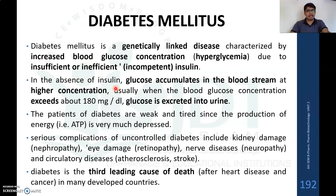In the absence of insulin in the body, there will be glucose accumulation in the bloodstream at higher concentration. Usually, if blood glucose concentration exceeds about 180 mg per deciliter, glucose will start to be excreted through the urine. Patients with diabetes are usually weak and tired since energy production is very depressed.